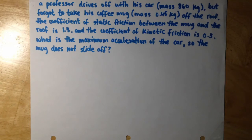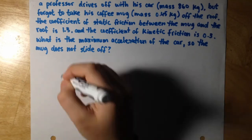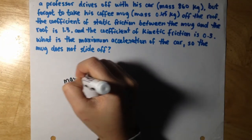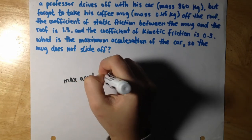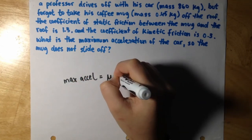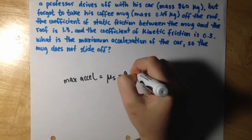And so we have a simple formula for this. The max acceleration is equal to the coefficient of static friction times 9.8.